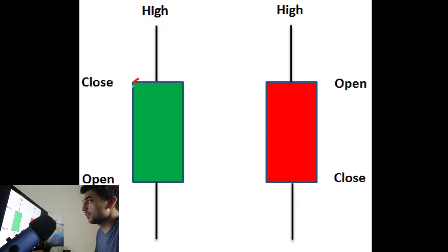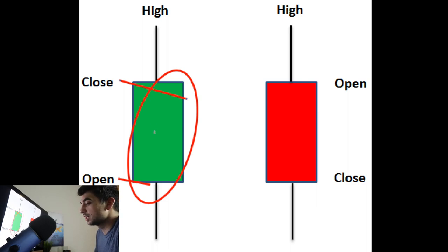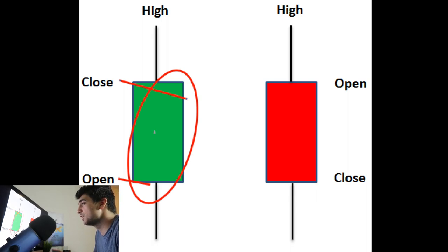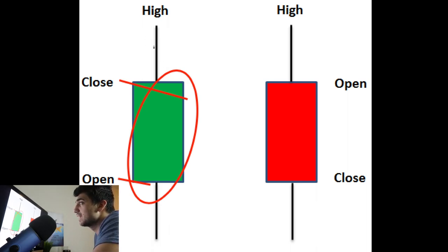The main part of a candlestick is called the body. The body just means the price opened here and it closed here — so the body is what the candlestick fulfilled over that time frame. Whether it's one hour, five minutes, or whatever, the body shows you the open and the close. The body is one of the most important things to look for because it tells you how strong the bullish or bearish sentiment was during that period.